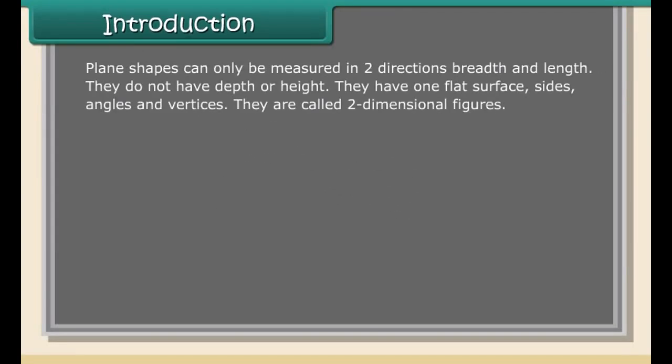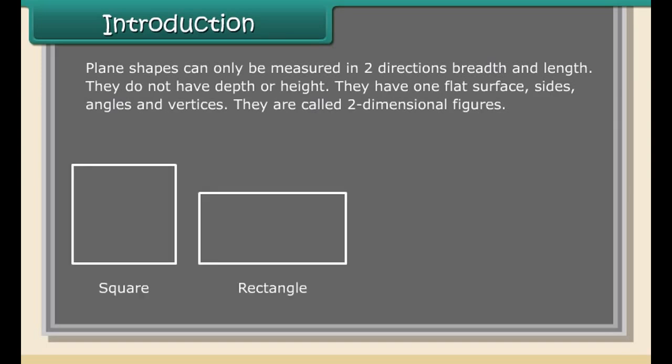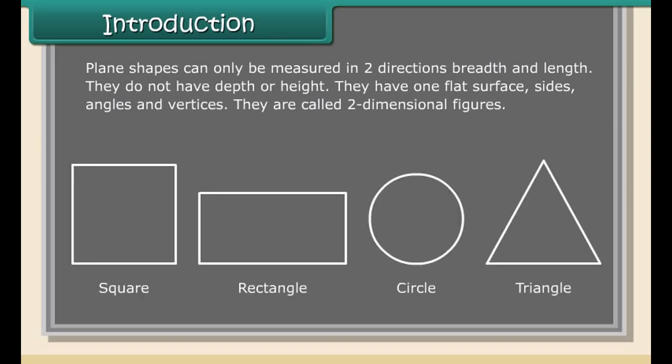Plane shapes can only be measured in two directions: breadth and length. They do not have depth or height. They have one flat surface, sides, angles, and vertices. They are called two-dimensional figures, such as square, rectangle, circle, and triangle.